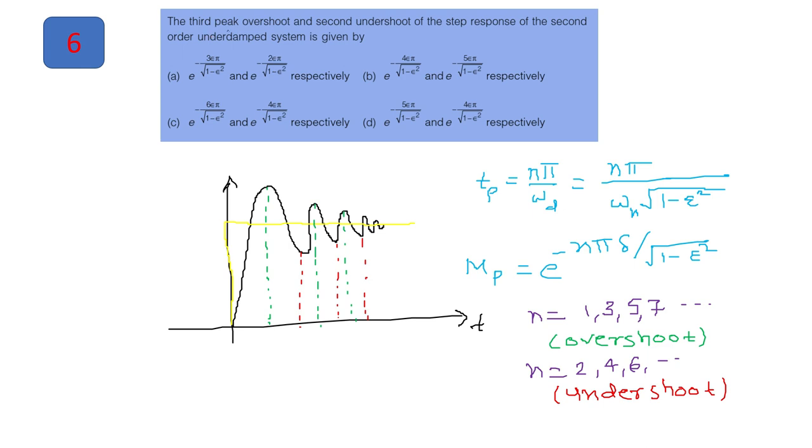Next question, this is from time domain analysis again. The third peak overshoot and second undershoot of the step response of a second order underdamped system. So system is underdamped. Input applied is unit step. So if you have this input applied, this is our input. And this is the output of your system. Now this is the time response behavior of the system. Where from this line, those peaks are called as an overshoot. And below this are known as the undershoot. So this is your first overshoot. This is your first undershoot. This is your second overshoot. And so on.